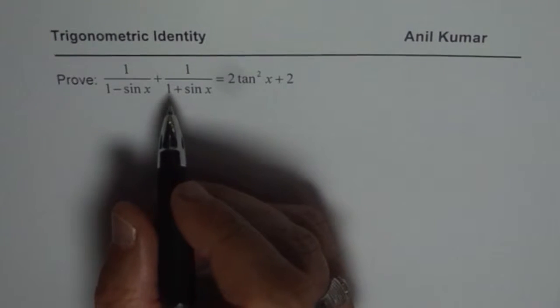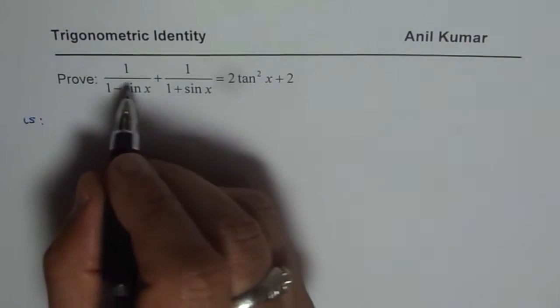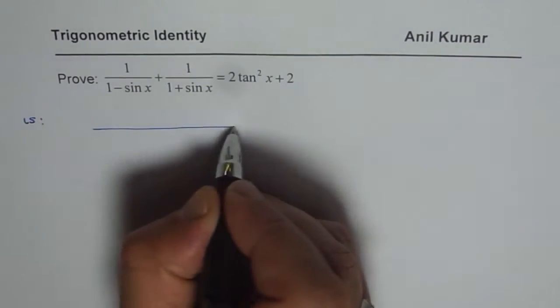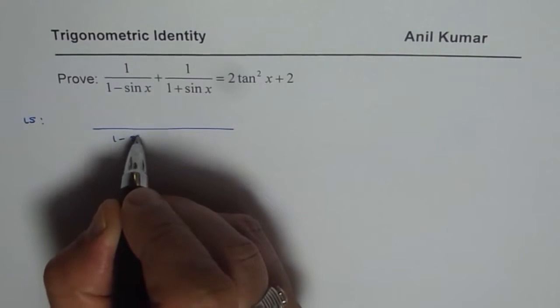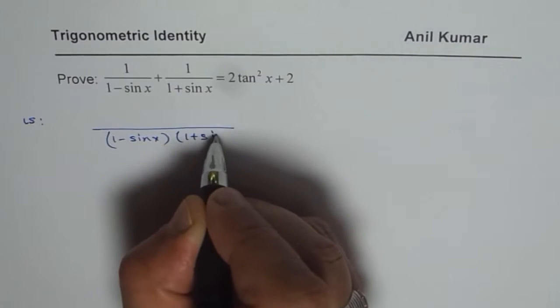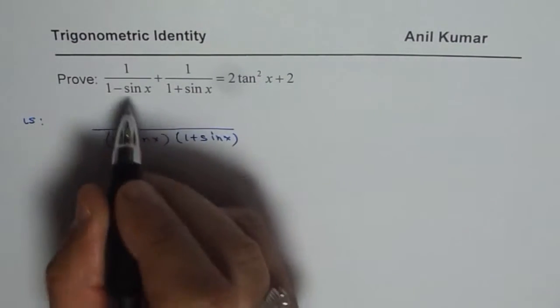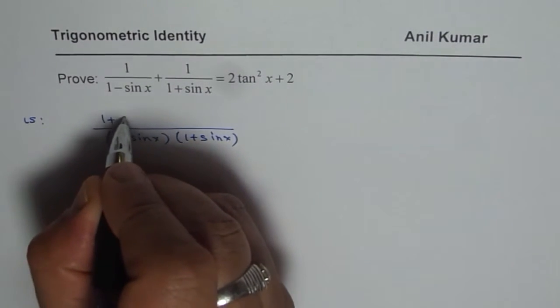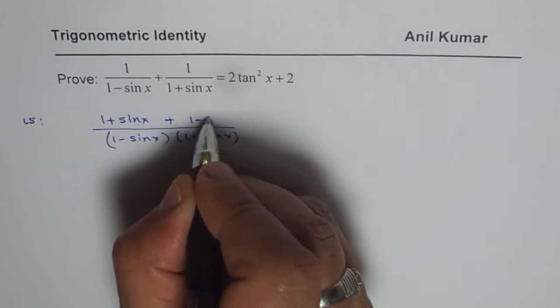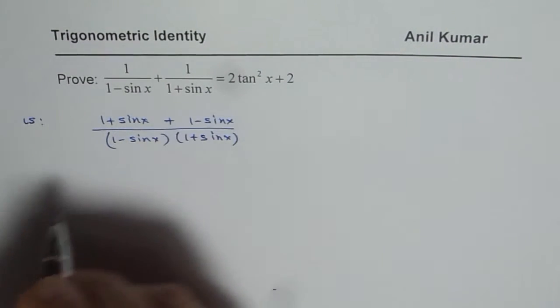So let us begin with the left side. Let us take a common factor of 1 minus sin x times 1 plus sin x. Now that gets cross multiplied. So we get 1 plus sin x plus 1 minus sin x in the numerator.